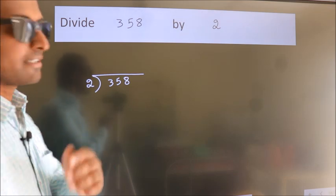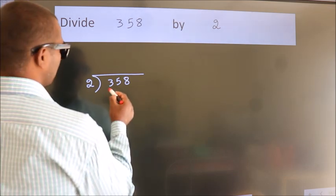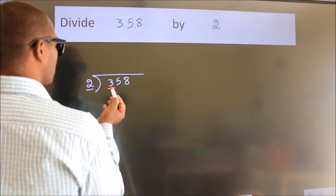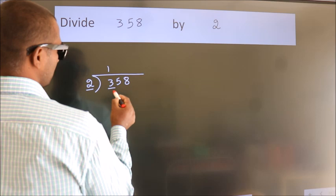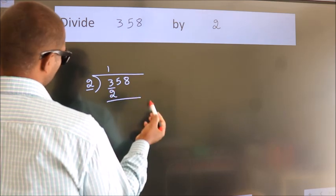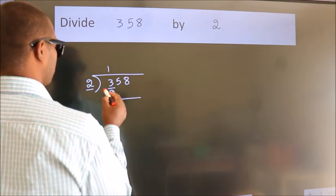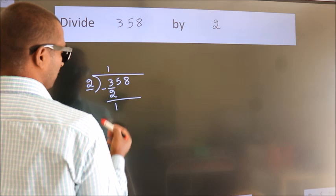Next, here we have 3, here 2. A number close to 3 in 2 table is 2 1s 2. Now, we should subtract. We get 1.